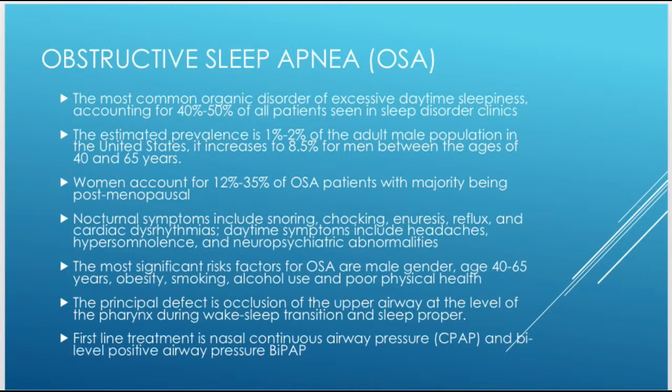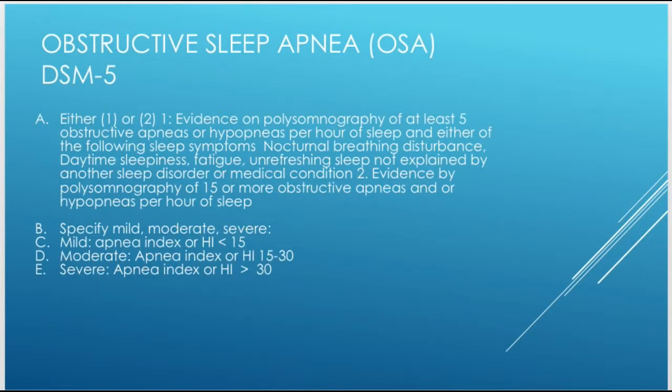The principal deficit in obstructive sleep apnea is occlusion of the upper airway at the level of the pharynx during the wake-sleep transition and sleep proper. First-line treatments are nasal continuous airway pressure (CPAP) and bilevel posterior airway pressure (BiPAP), with CPAP being the more common choice.